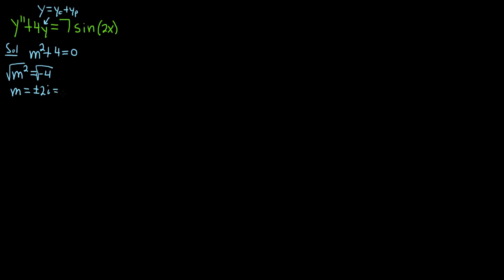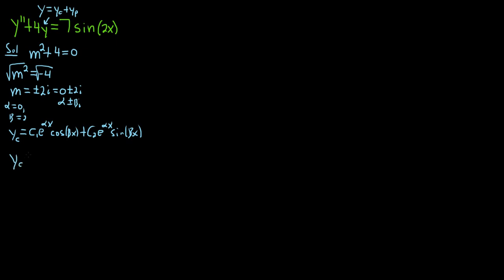Recall that when you have complex conjugates, you want to think of it as 0 plus or minus 2i. The form is alpha plus or minus beta i. So here alpha is 0 and beta is 2. The formula for Y sub C is C1 e to the alpha X cosine beta X plus C2 e to the alpha X sine beta X. Plugging everything in: since alpha is 0, e to the 0 is 1, so we just get C1 cosine 2X plus C2 sine 2X.